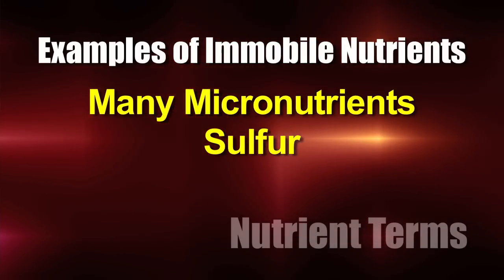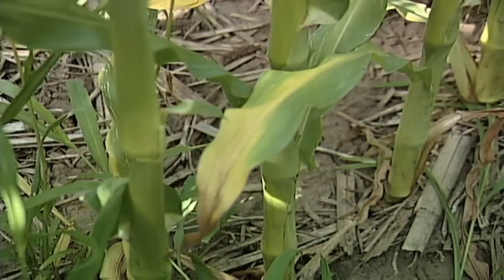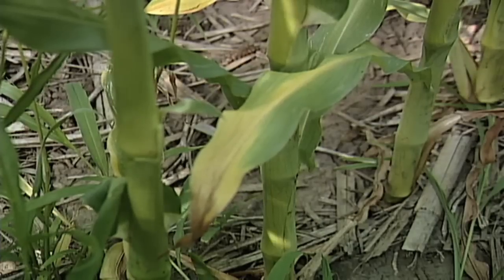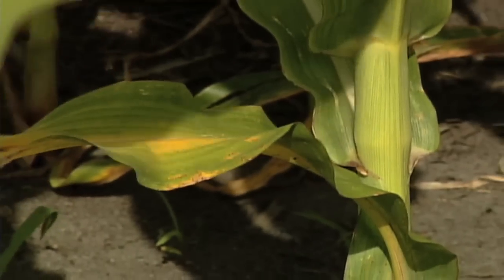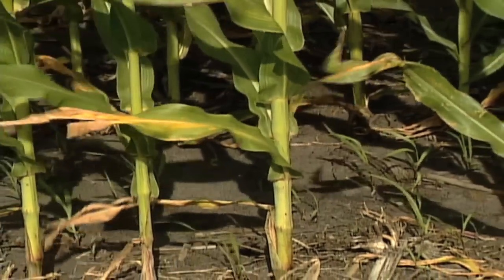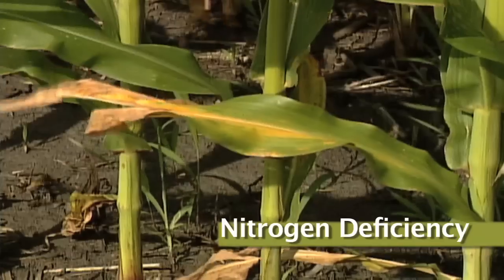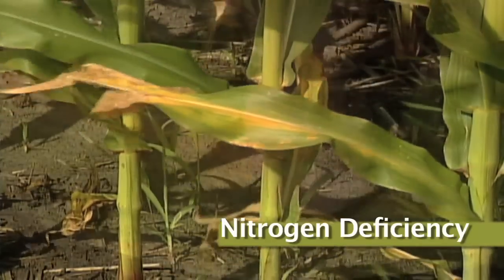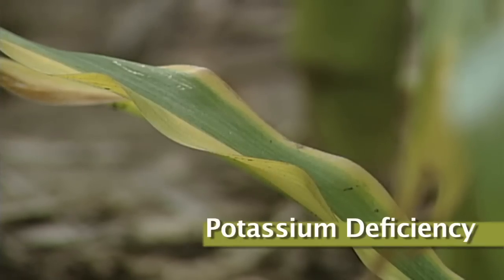If you saw yellowing on the top of a plant you would know it's probably a sulfur deficiency or one of the micronutrients. If you see yellowing on the lower leaves it's probably nitrogen or potassium, because those nutrients are mobile. But these things can get easily confused — nitrogen and potassium both cause yellowing on the lower leaves. When a farmer looks at a field and says okay, it's either nitrogen or potassium because my bottom leaves are yellow, how do you tell the difference? With nitrogen, that yellowing starts at the tip of the leaf and moves down the midrib — the center vein — and often you'll see a V-shaped pattern progressing down toward the main stalk.